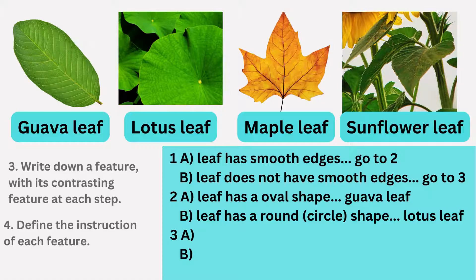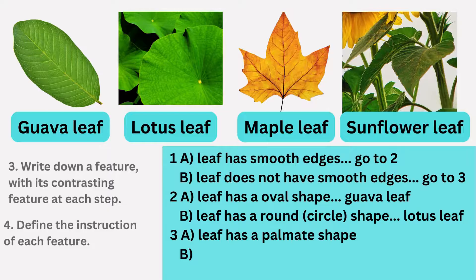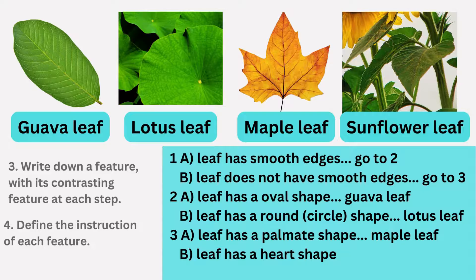For step three, our focus shifts to comparing the leaves without smooth edges — the maple and sunflower leaves — using their distinct differences in shape, color, and edges. In 3a, we write that the leaf has a palmate shape, identifying it as the maple leaf, and in 3b, we write that it has a heart shape, identifying it as the sunflower leaf.